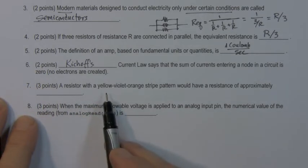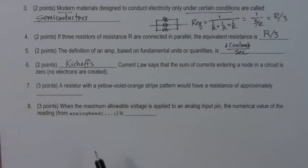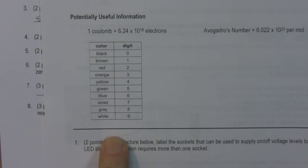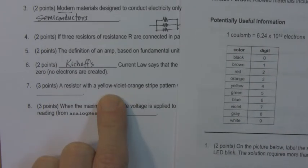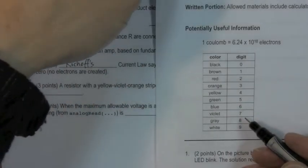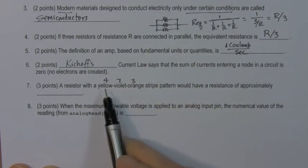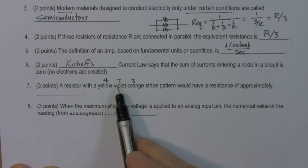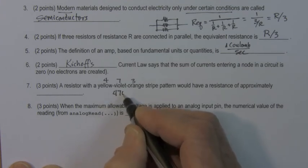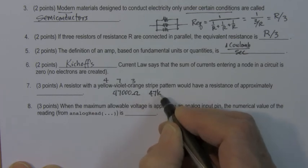Number seven. A resistor with a yellow-violet-orange stripe pattern would have a resistance of approximately what? We consult the table of resistance values given with the exam, and it was yellow-violet-orange. Yellow is four. Violet is seven. Orange is three. Four, seven, three. The first two digits are the resistance values. The third digit is the number of zeros. So this is four, seven, three zeros. Forty-seven thousand ohms or forty-seven kilo-ohms.